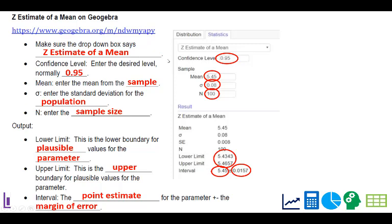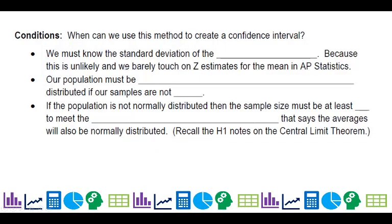One other thing to think about when the conditions, when can we use this method to create a confidence interval? We must know the standard deviation of the population because this is unlikely. We almost don't do this in AP stats at all because most times if we don't know the mean, how are we going to know the standard deviation? But we do cover it in this class. So it's important for you to know how to calculate it.